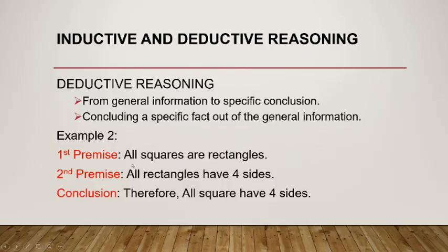Dito naman, ang given natin general information is all squares are rectangles. Dito, hindi natin sigurado kung tama ba ang sinabi. Pero, mapansin natin sa second premise, all rectangles have 4 sides, which is another general information and it is a fact. Alam natin yun. So, sa conclusion natin, pwede natin i-conclude that all squares have 4 sides. Since ang squares ay rectangle, at ang lahat ng rectangle ay may 4 sides, so yung square na rectangle ay magkakaroon din ng 4 sides.